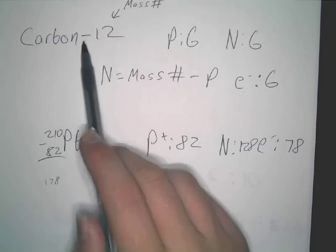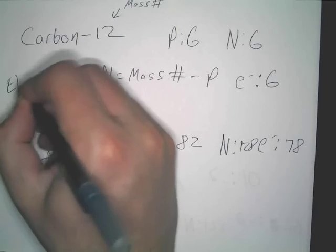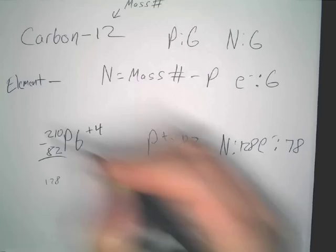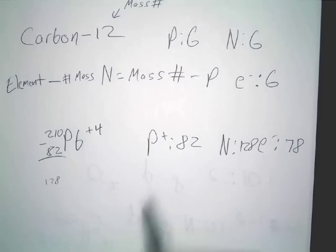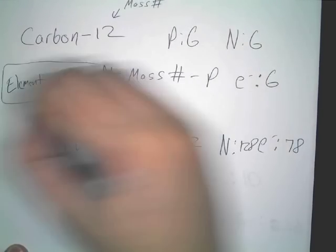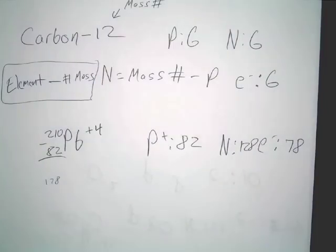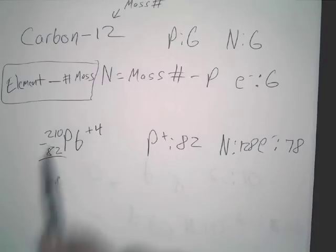Because the dash, whenever you see a notation like that, when you see elements dash, that's going to be the mass number over here. No, the mass number is protons plus neutrons. Remember that, mass number is protons plus neutrons. Every time. What's the 210? That's the mass number.